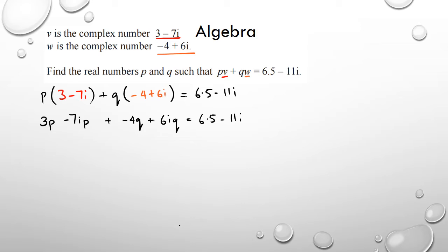If you remember, all the real numbers on the left-hand side should equal all the real numbers on the right-hand side. So I'm looking for numbers without i — that gives me 3p minus 4q, which should equal 6.5. My second set of equations involves the terms with i, and that should equal negative 11i.